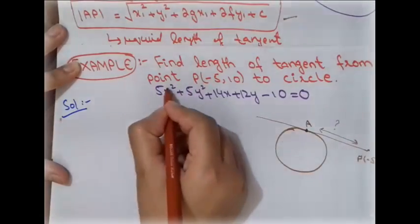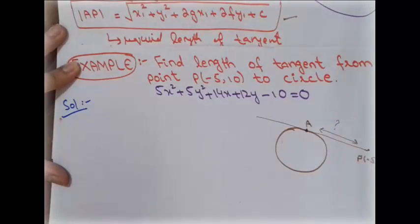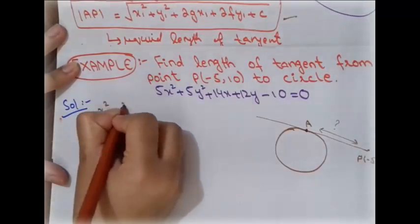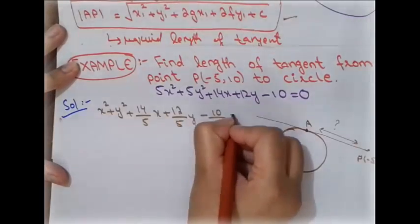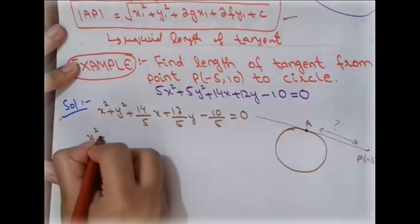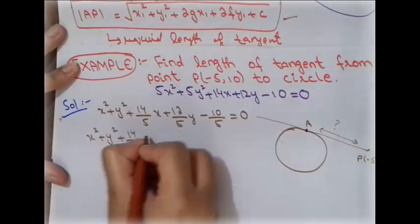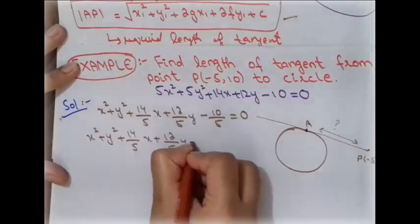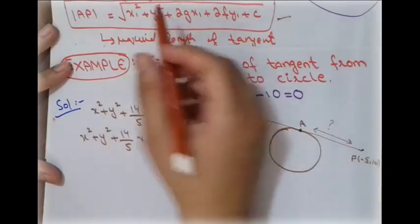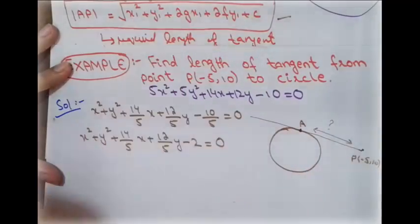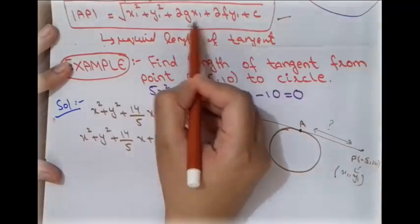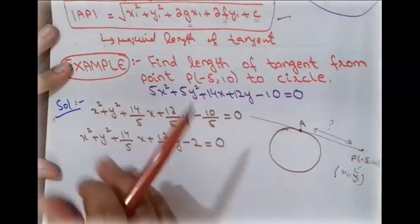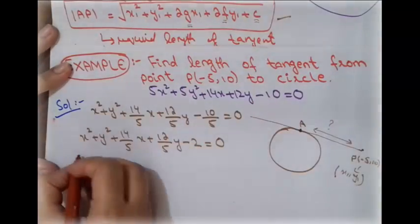In the general equation of a circle, the coefficients of x² and y² must be 1. So the first step is to divide the whole equation by 5, giving: x² + y² + (14/5)x + (12/5)y − 2 = 0. Now we need the values of x₁, y₁, g, f, and c, found by comparing this equation to the general form x² + y² + 2gx + 2fy + c = 0.